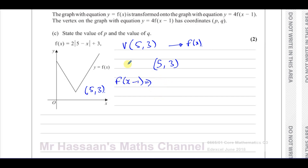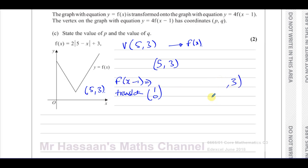f(x minus 1) represents a horizontal translation by the vector (1, 0). It's always the opposite of what's inside — it says minus 1, so you move to the right. When it's inside the function it does the opposite. The y-value is unchanged; the x-value is increased by 1. So the vertex (5, 3) becomes (6, 3) after this first part of the transformation.